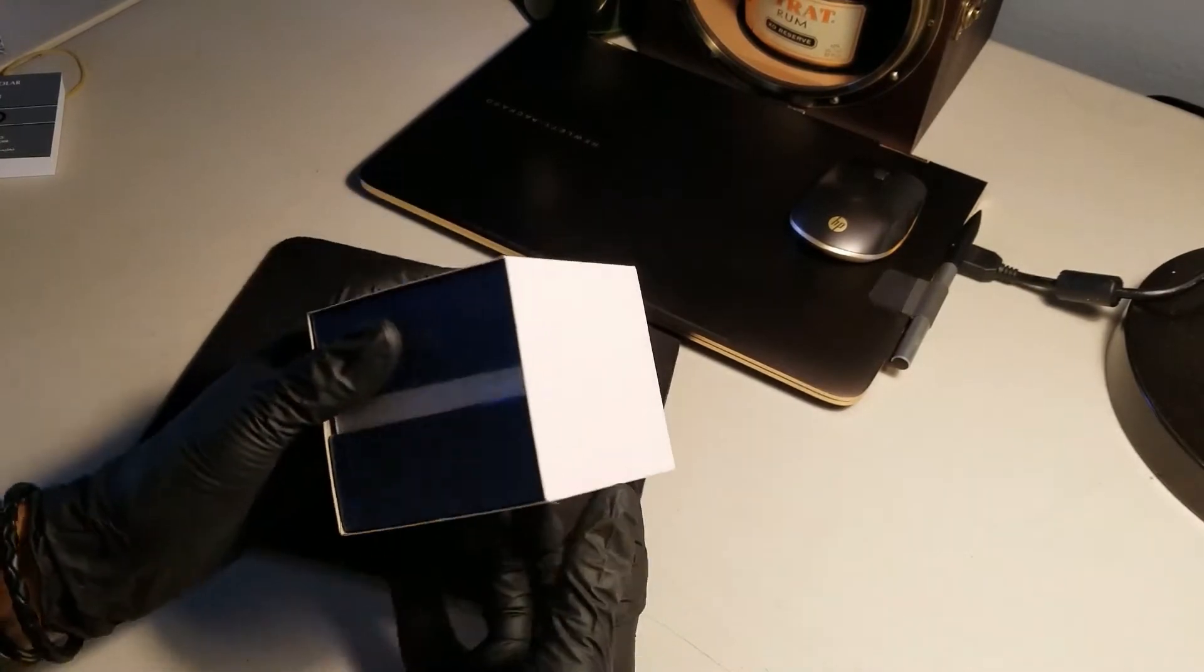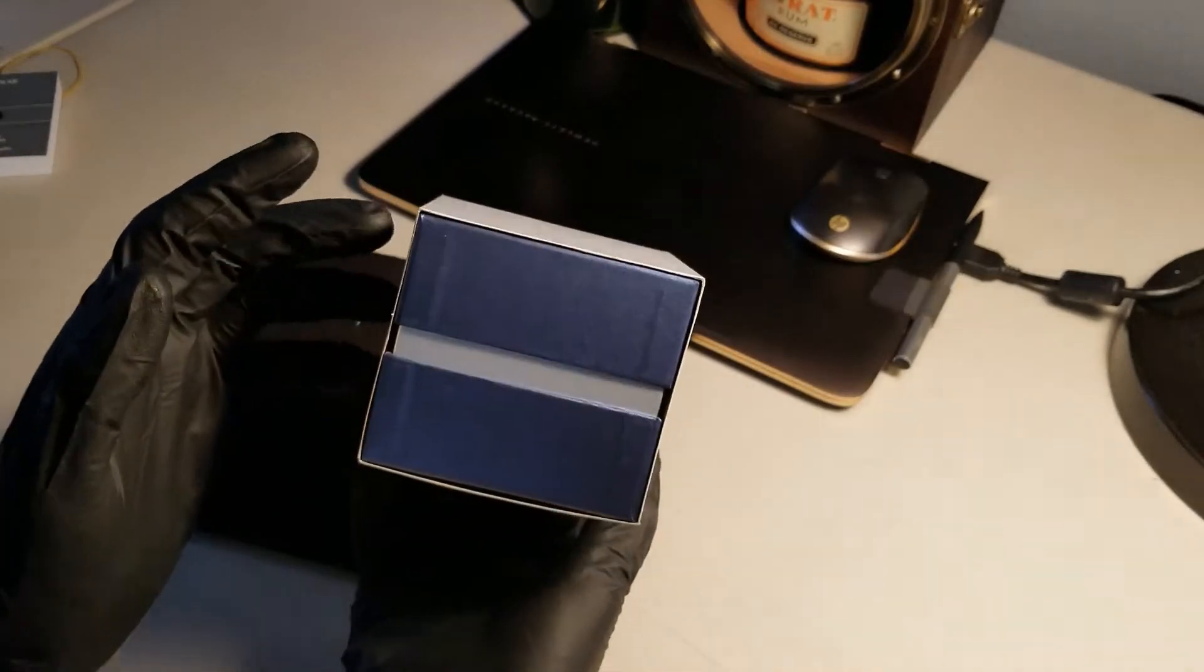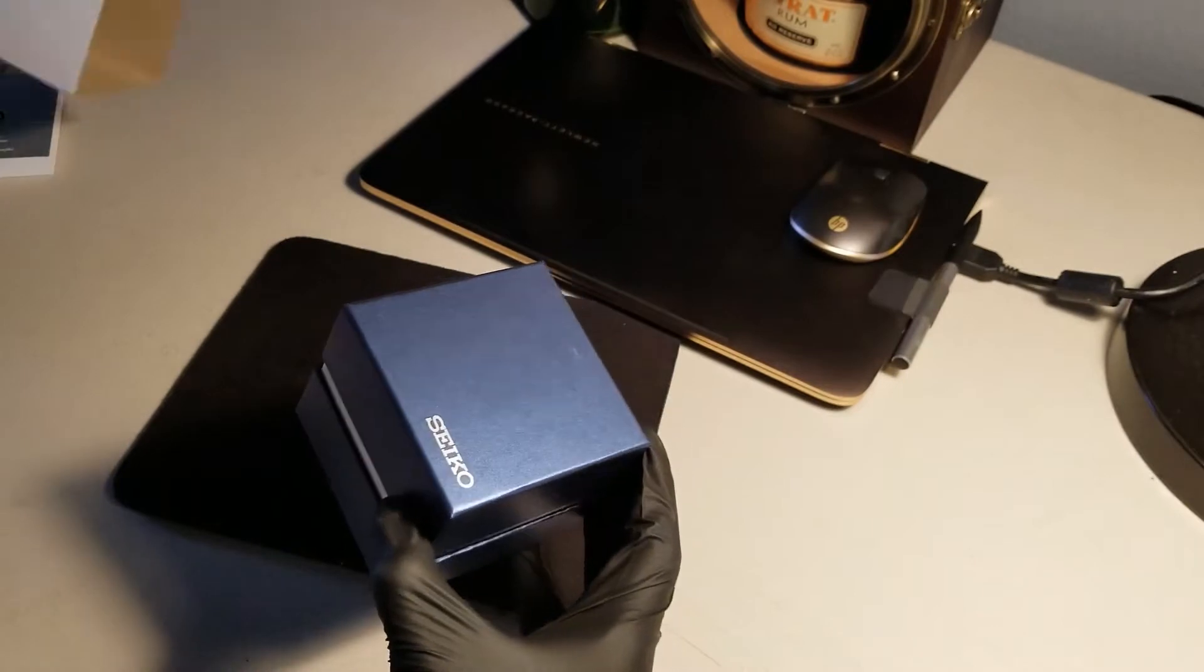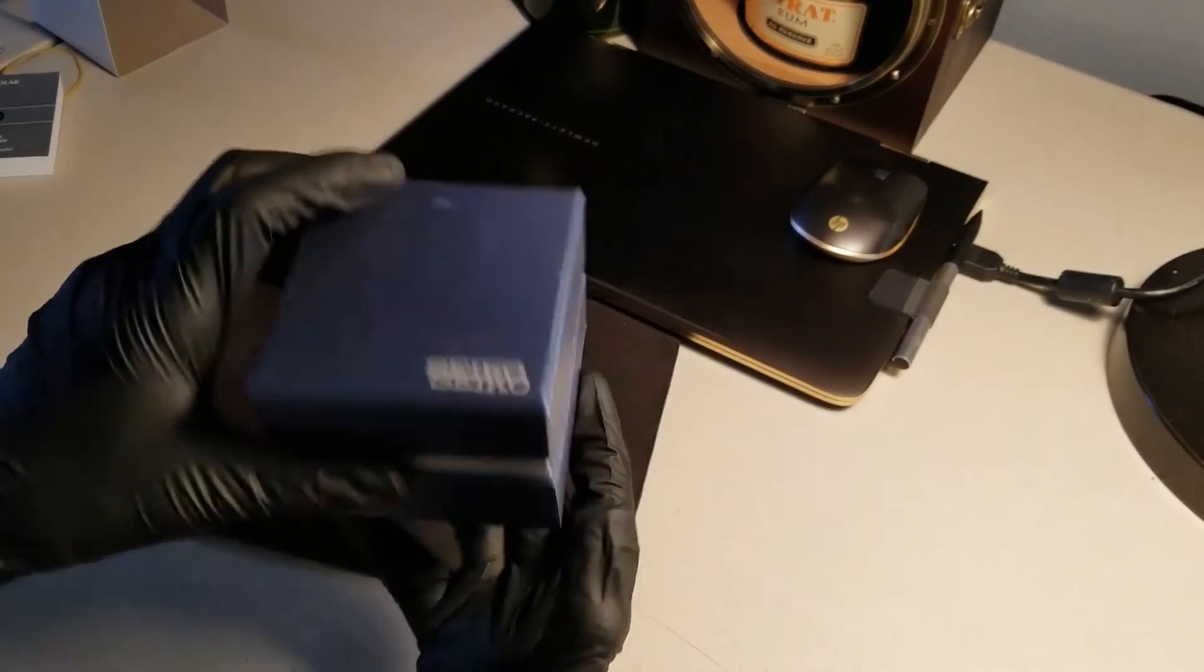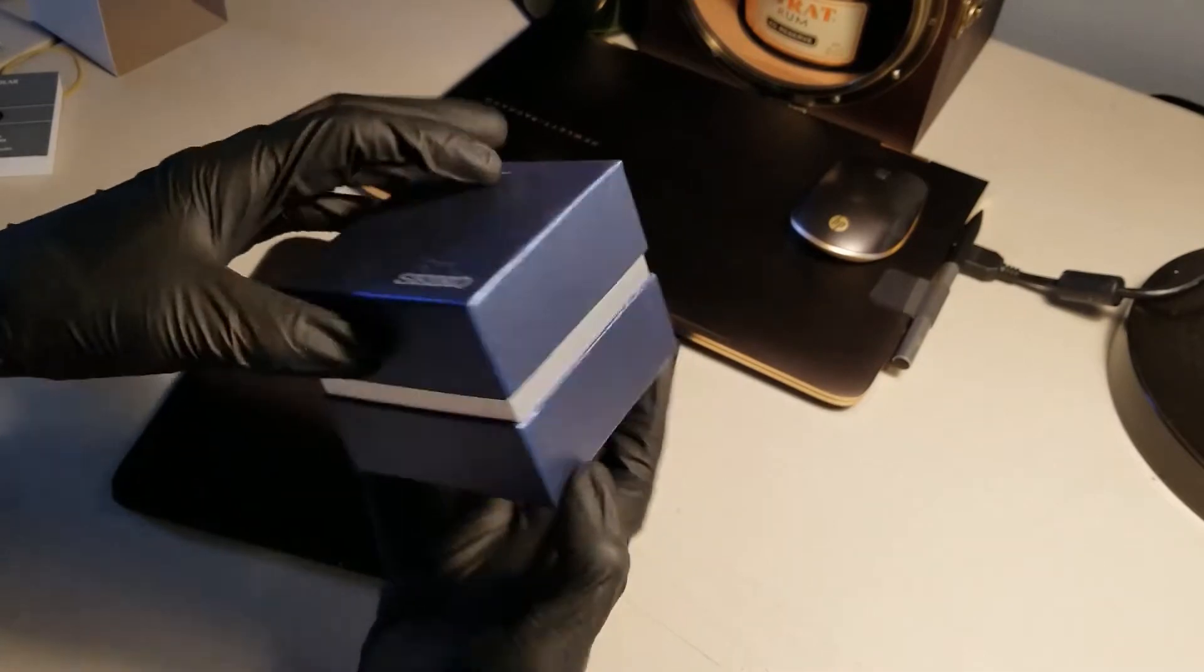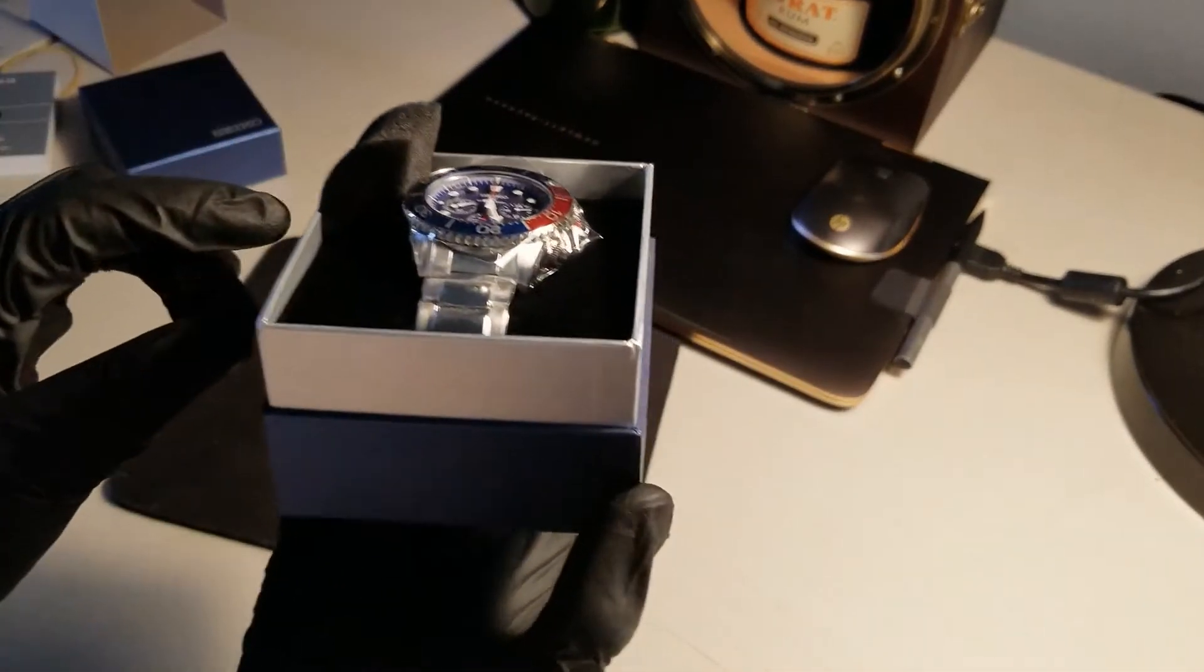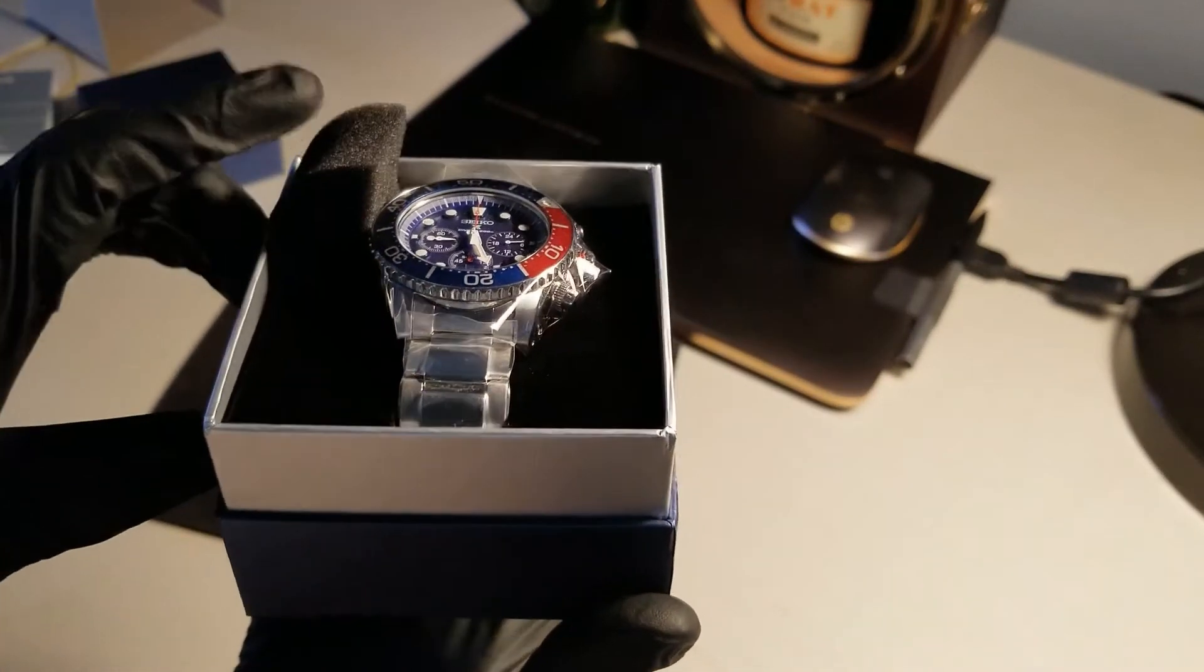Now we're going to go ahead and start opening the packaging. Typical, we have our white enclosure there, a little scuffed, no big deal. If you guys noticed, they included a little cushion here to protect the watch from any impacts, which was appreciated.